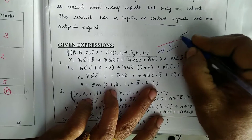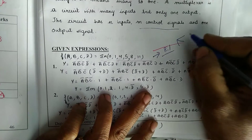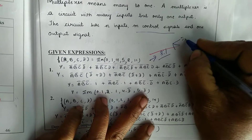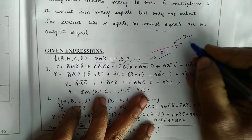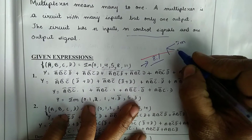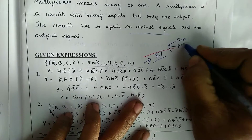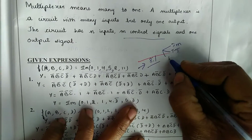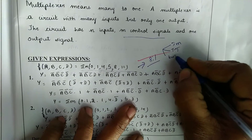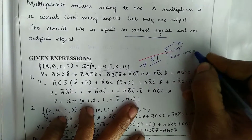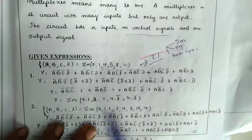There are 3 methods you can use: one is the implementation table, the second is truth table reduction, and the third is Boolean expression reduction.